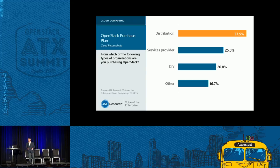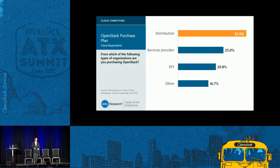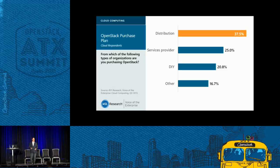Where are enterprises buying OpenStack from? Options include distros, service providers, managed services, or DIY. When we ask where they'll consume OpenStack, distros are typically what we're hearing at 38%. There were discussions about whether the distro is dead — according to the enterprises we talk to, that is the favorable path. Initially they were going the DIY route to kick the tires, but now they want indemnity and support, so they're looking to distros to provide that.